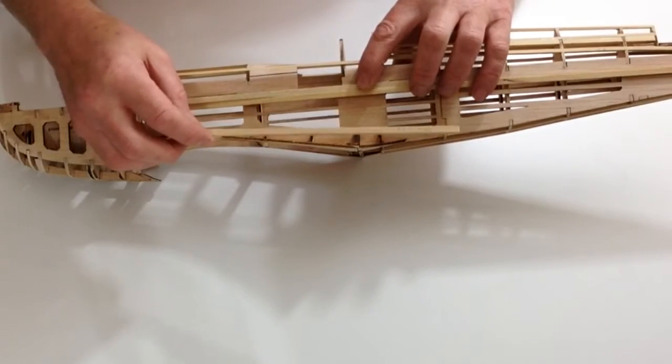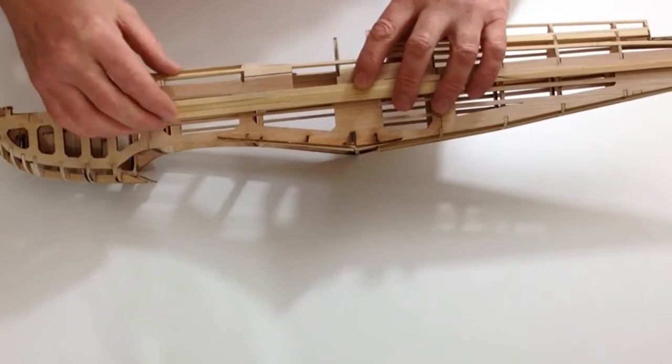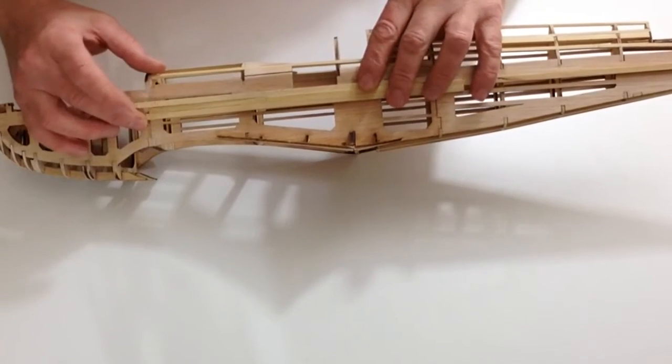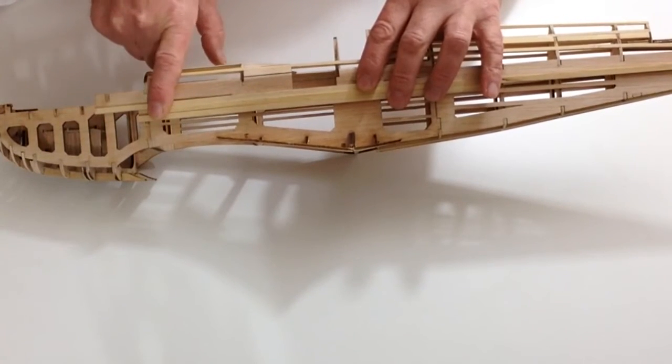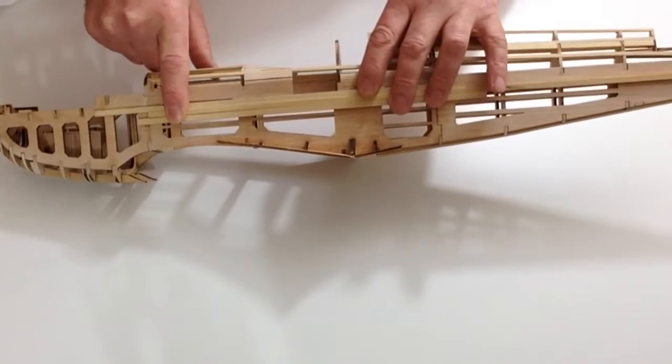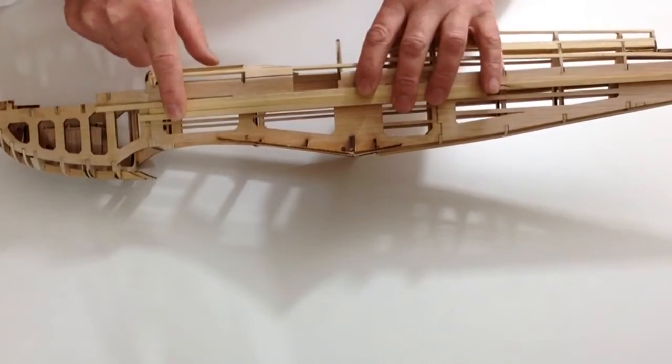Take a 3x5mm 300mm strip and place that underneath so that you've got 3 strips, noting where that plank ends. Glue those down in position. Once you've done that, do exactly the same for the other side.